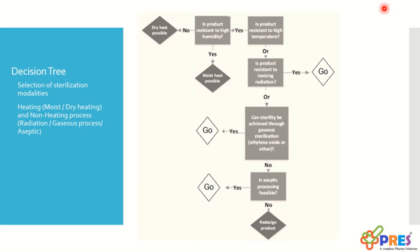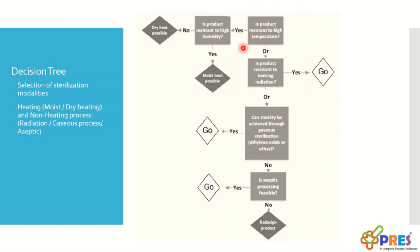Now we'll discuss the decision tree. This decision tree starts from whether the product can resist high temperature. As we know, heating is a very conventional way of doing sterilization and it is very proven and accepted by regulatory authorities. If the answer is yes, we can further check whether the product is stable at higher humidity as well. If the answer is again yes, then the choice of sterilization modality will be moist heat. If high humidity is not suitable, the choice might be dry heat sterilization. When the product cannot resist high temperature, we can move further to ionizing radiations or gaseous sterilization.